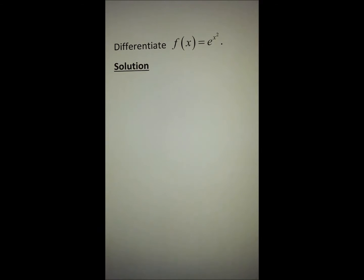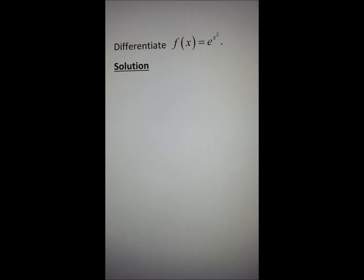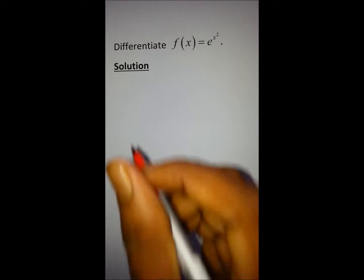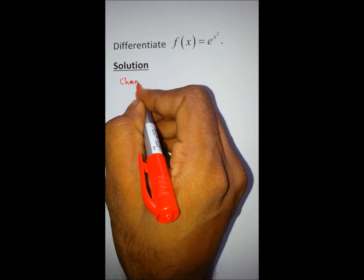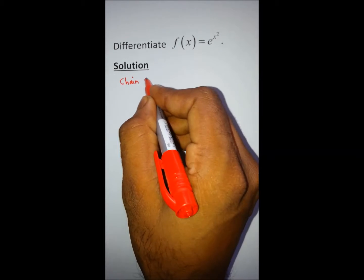Today we will differentiate f(x) = e^(x²). To differentiate this function we need to use the chain rule. The chain rule states that we differentiate the outer function first, leaving the inner function alone, times the derivative of the inner function.